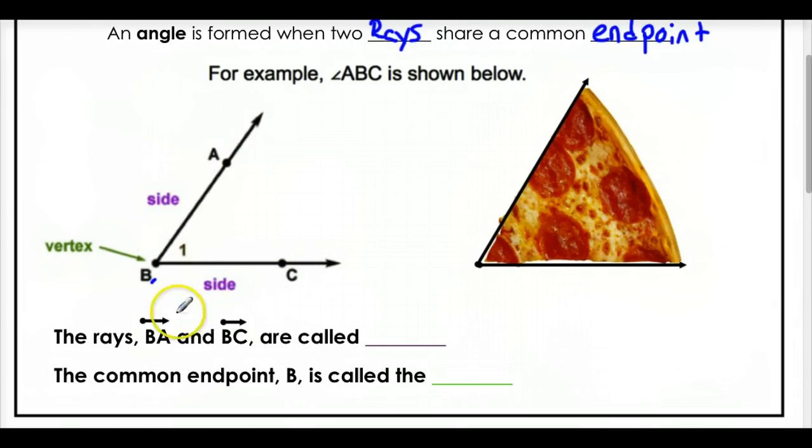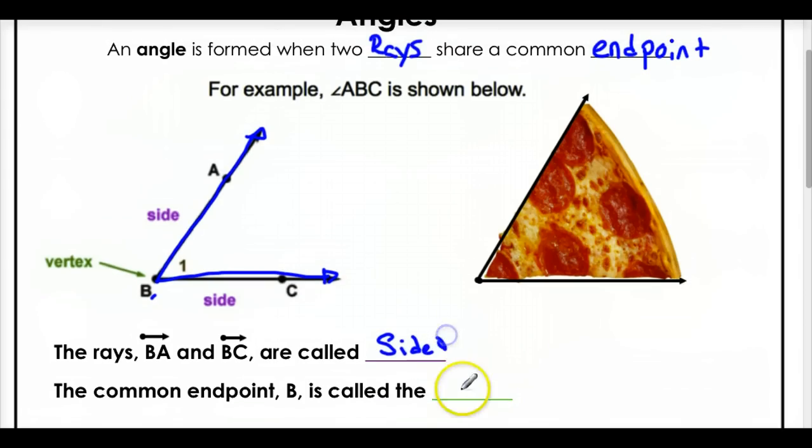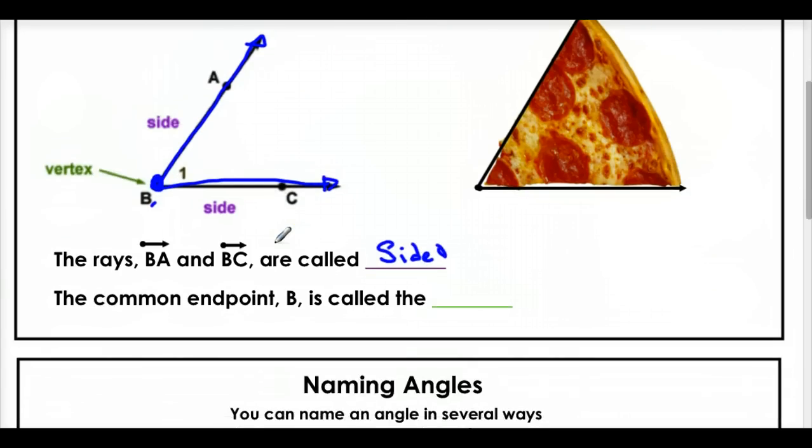The sides are ray BA. That's one side. And ray BC. That's the other ray. And these are called the sides of the angle. The common endpoint, which is right here, this is their common endpoint, is called the vertex. So point B would be called the vertex.